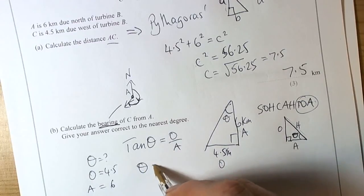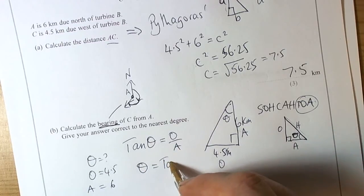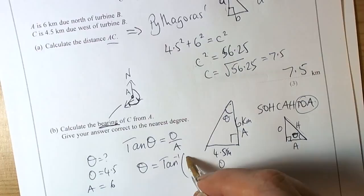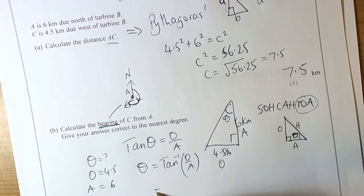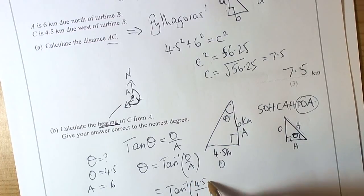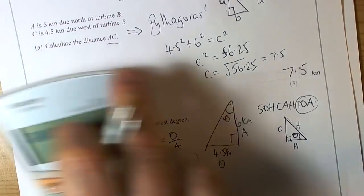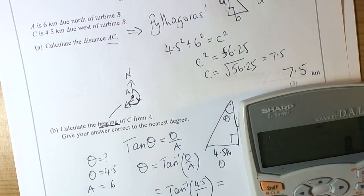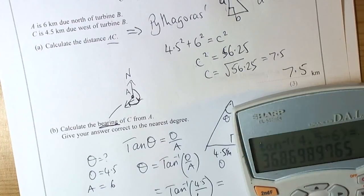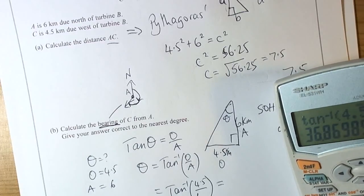We want theta, so the inverse of tan is tan to the minus 1 of the O and A value. So we are going to do the inverse tangent of the O value, 4.5 over the 6.